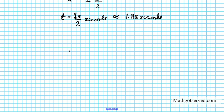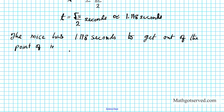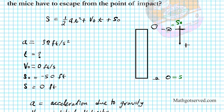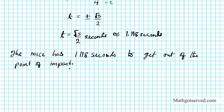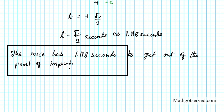Well, what this answer basically means is that the mouse has 1.118 seconds to get out of the point of impact. Because as soon as the clock hits 1.118 seconds, the turkey is going to be hitting that point, that point directly beneath it, which happens to be the point where the mouse is. So after 1.118 seconds, the turkey is going to impact the ground. So there goes the solution to our problem involving the freefall of a turkey.